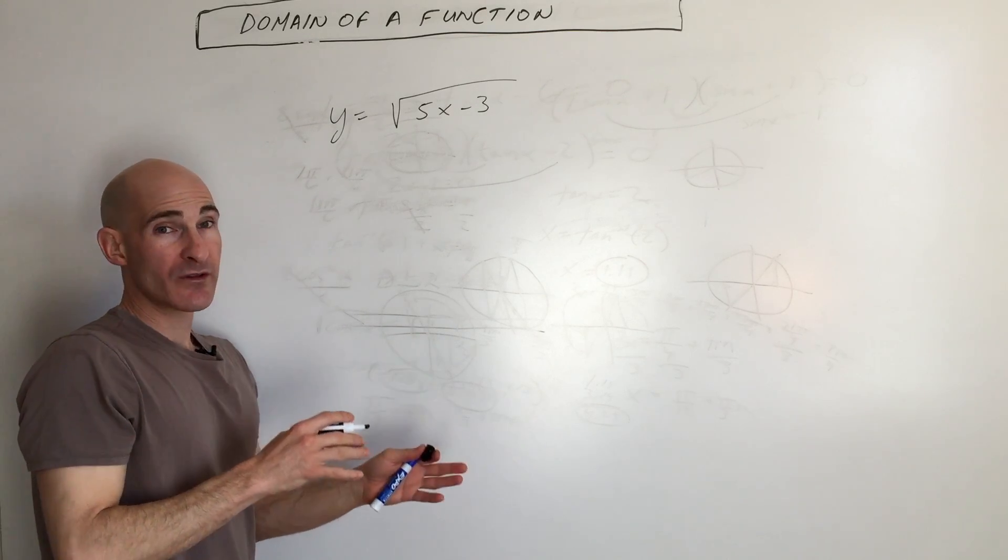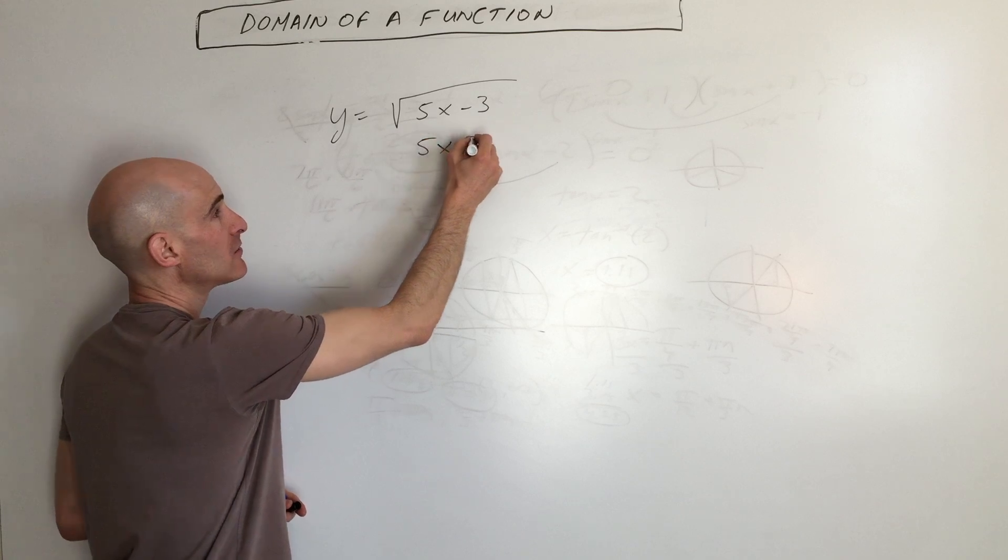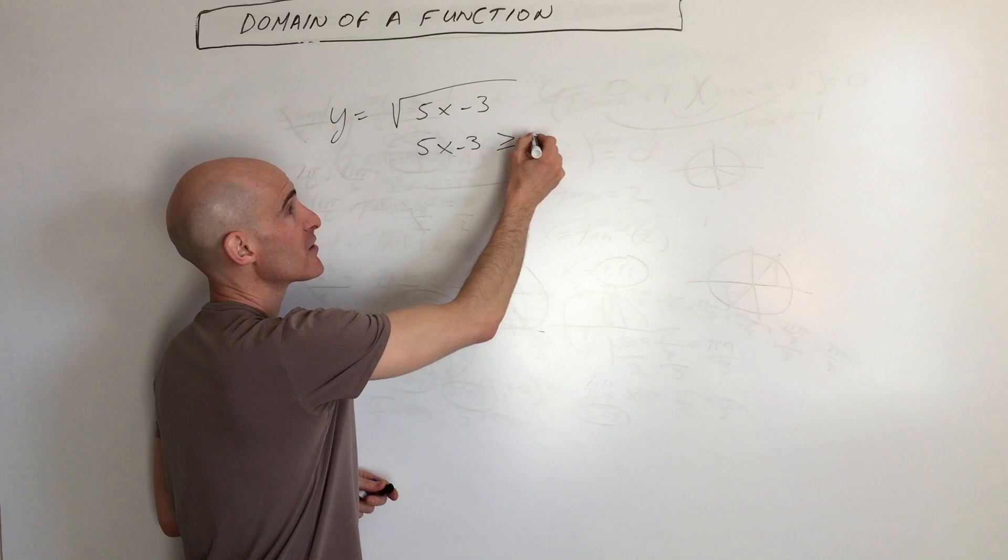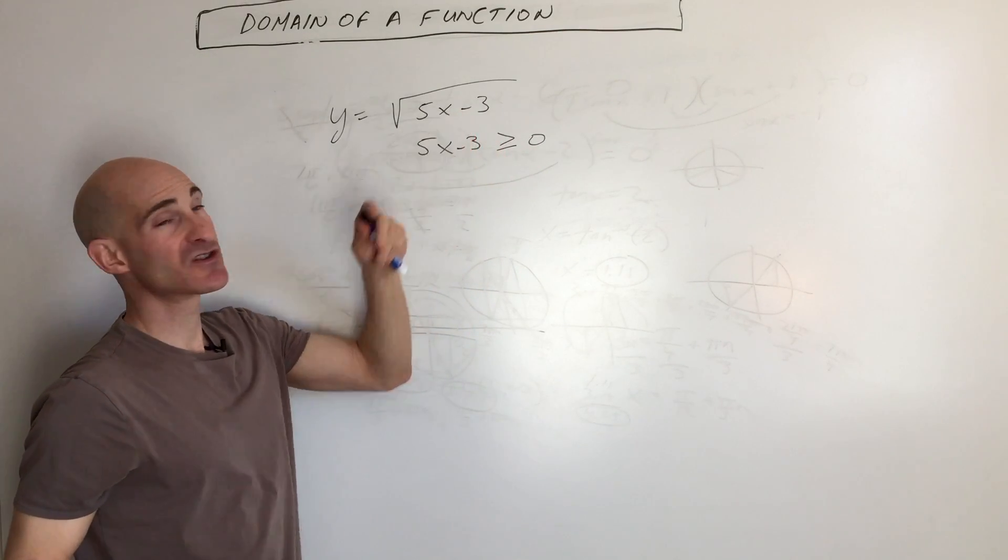we don't want what's underneath this radical to be negative. So the way we can find the domain in this problem is we can take what's underneath the radical and just make it into an inequality. This has to be greater than or equal to zero. Greater than meaning positive or equal to zero. Square root of zero is just zero.